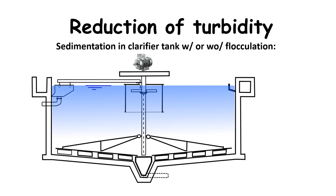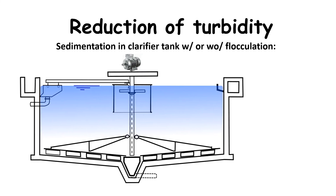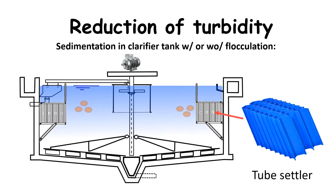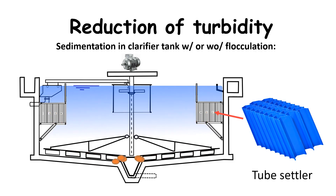To improve the settling process, inclined plate settlers or tube settlers can be used. These consist of inclined settling planes, which reduce the settling path and therefore the settling time of particles. Additionally, flocculation can be used to increase the sizing of particles and their settling velocity.